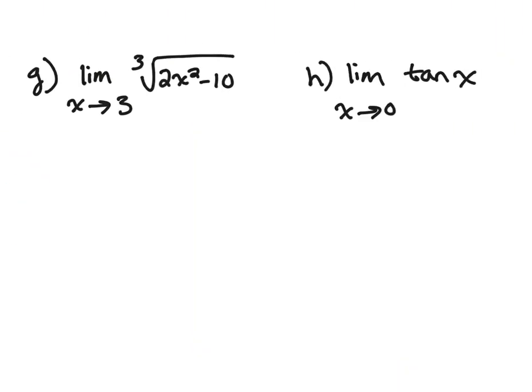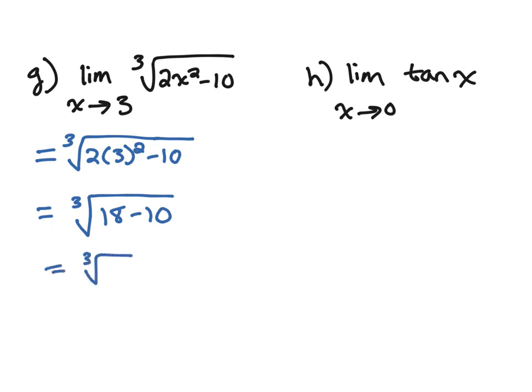Problem G, we're going to substitute a 3 in for our x. So I get the cube root of 2 times 3 squared minus 10, which is the cube root of 18 minus 10 or the cube root of 8, which is 2.